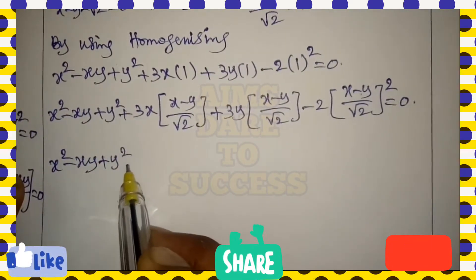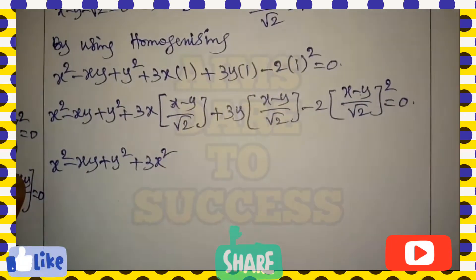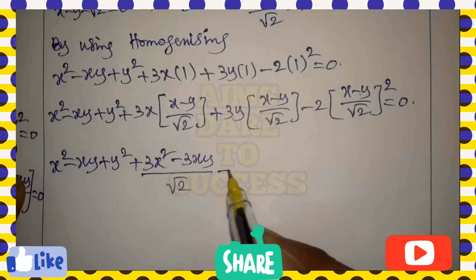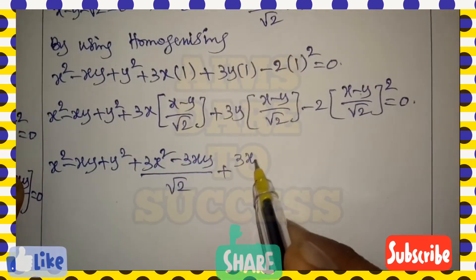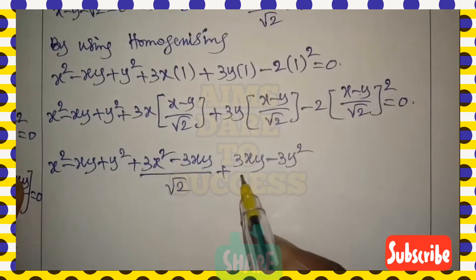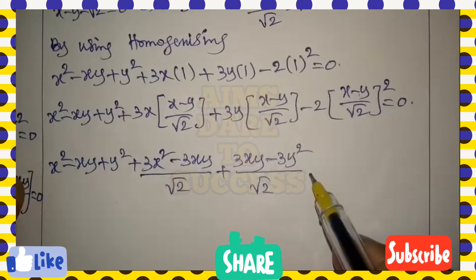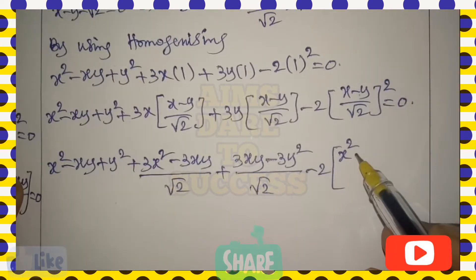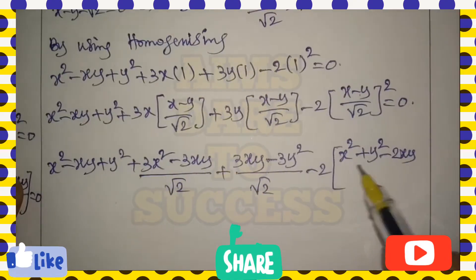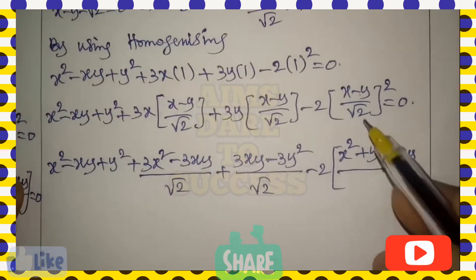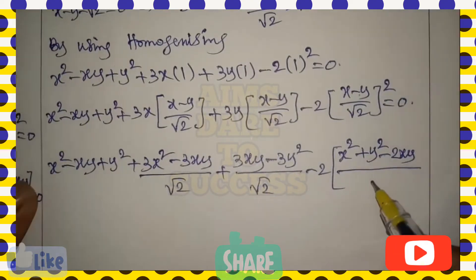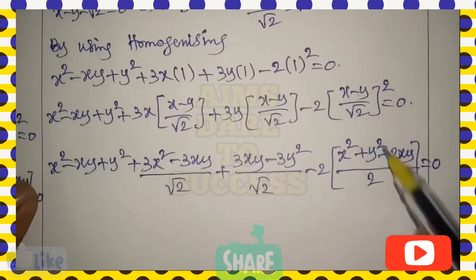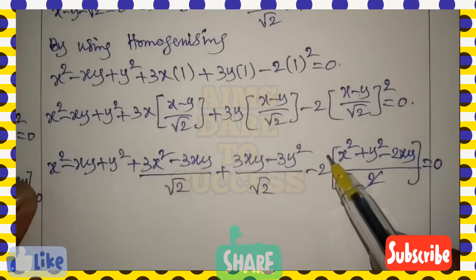Expanding: x² - xy + y² + (3x² - 3xy)/√2 + (3xy - 3y²)/√2 - 2 · (x - y)²/(√2)² = 0. Using (a - b)² = a² + b² - 2ab, the numerator becomes x² + y² - 2xy. The denominator (√2)² = 2, and the 2 in the numerator and denominator cancel out.